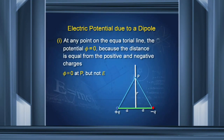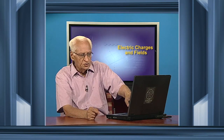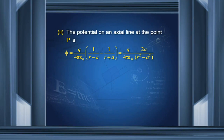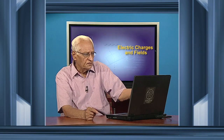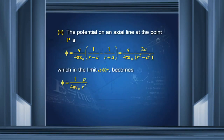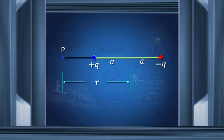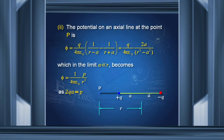We take a point P along the axis of the dipole. The distance r is such that the distance from minus q to P is r plus a, and from plus q to P is r minus a. The potential due to plus q is q over 4πε₀ times 1/(r−a), and due to minus q it is −q over 4πε₀ times 1/(r+a). Adding them, in the limit where a is much less than r, the potential is (1/4πε₀)(p/r²), where p = 2aq is the dipole moment.